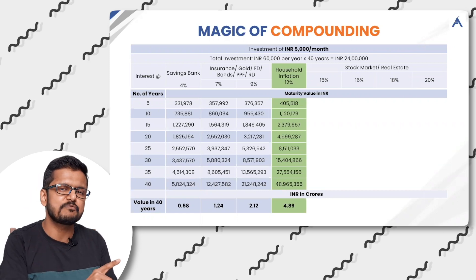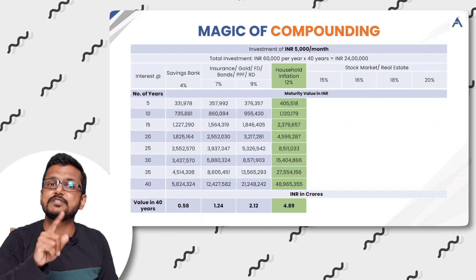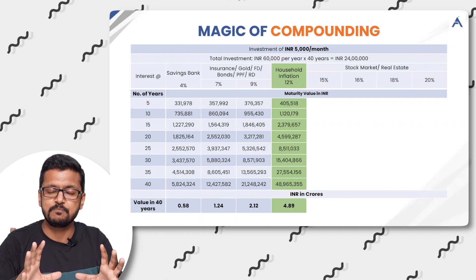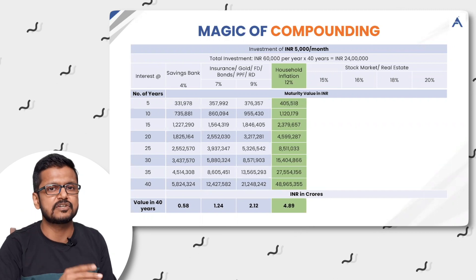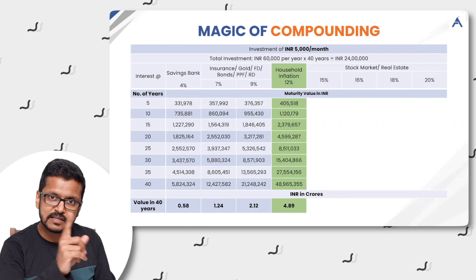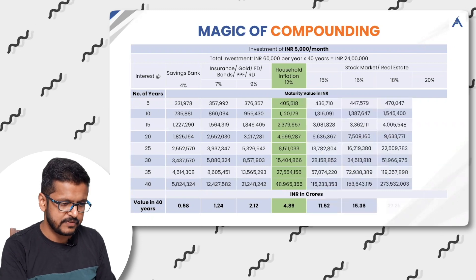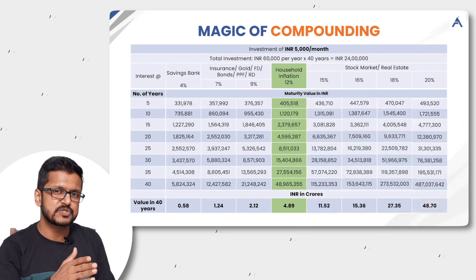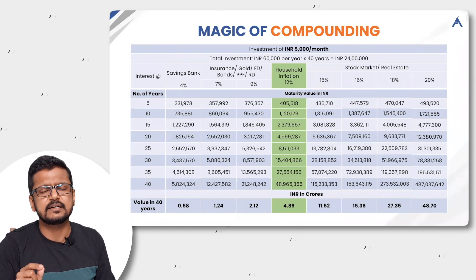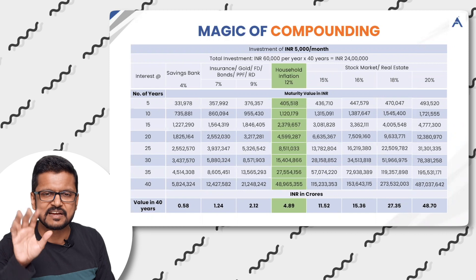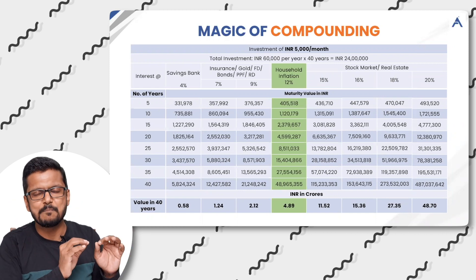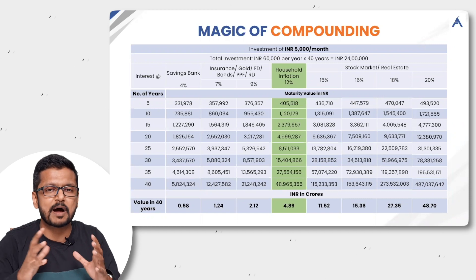But you don't see the majority of people having 5 crores at retirement. Why? This proves that on average, the kind of investments they have made have given much less returns than even 12% in the last 40 years. And if you look at the last four figures — 15, 16, 18, and 20% — the numbers you get are 11.52 crores, 15 crores, 27 crores, and 48 crores. This is just by investing 5,000 rupees per month. That's why it is called the magic of compounding or the power of compounding.